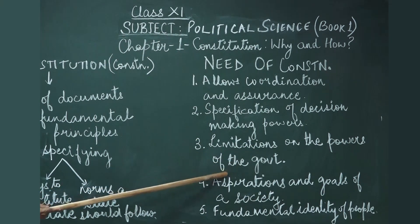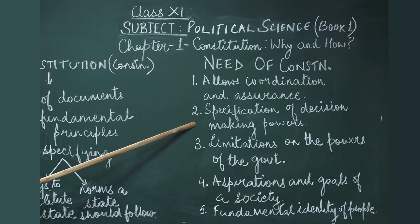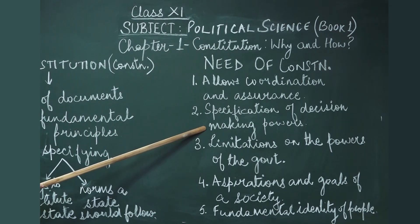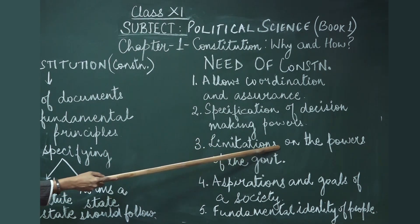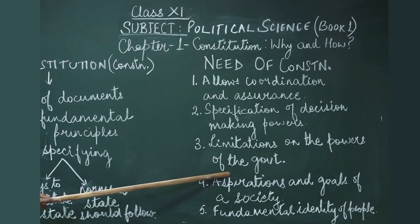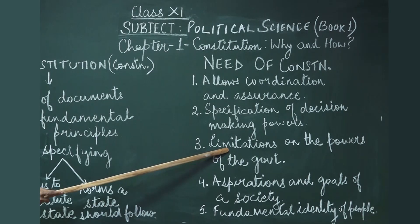Third, limitations on the powers of the government. The next question was: we have given some people certain powers to make rules for the country — but what if these people become autocratic and start using these powers for their own interest? To avoid such problems, the constitution puts limitations on the powers of the government. The government cannot in any circumstances exceed or go against what is written in the constitution. This limitation ensures they make decisions for the welfare of the country and not to fulfill their own interests.